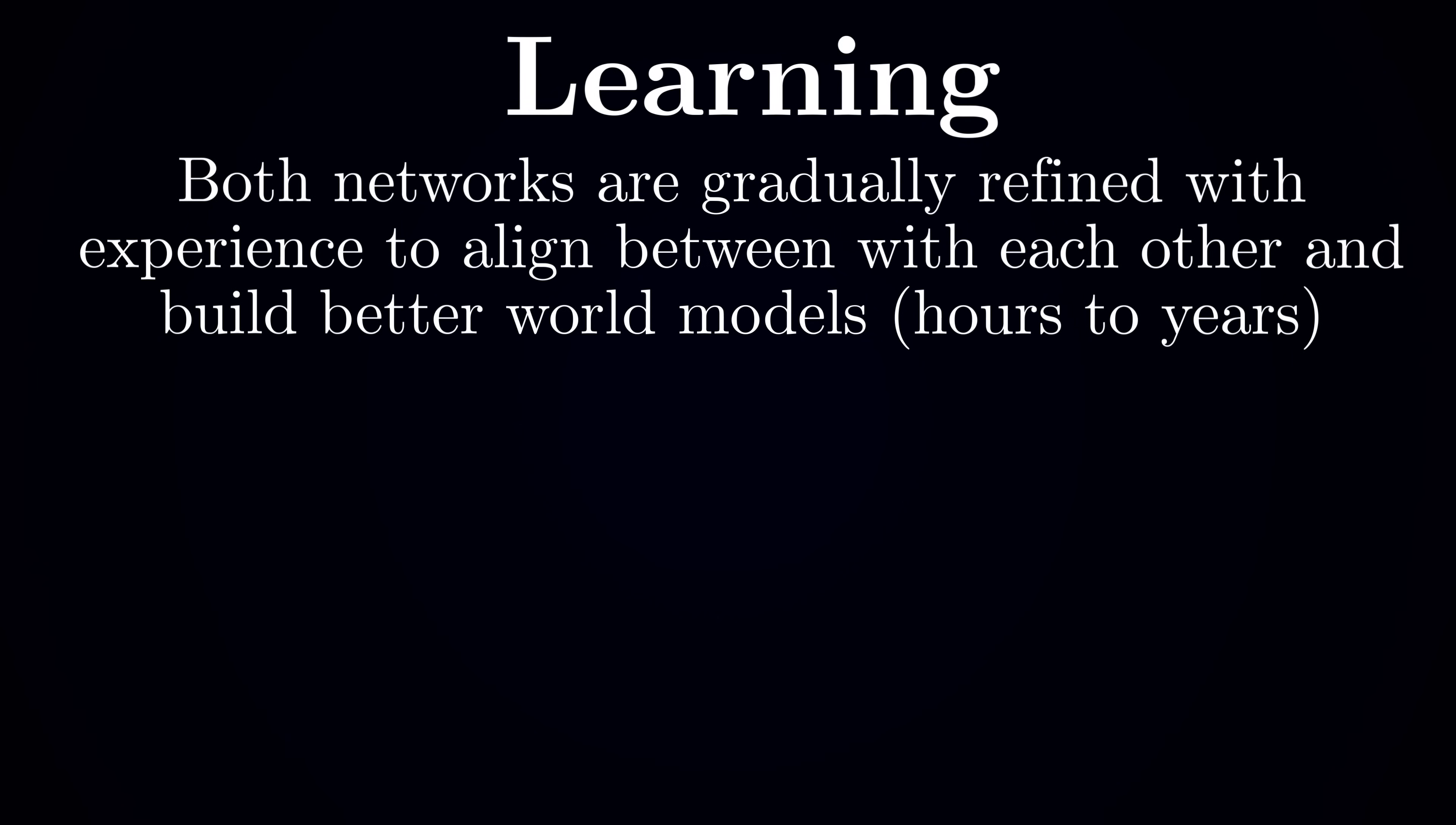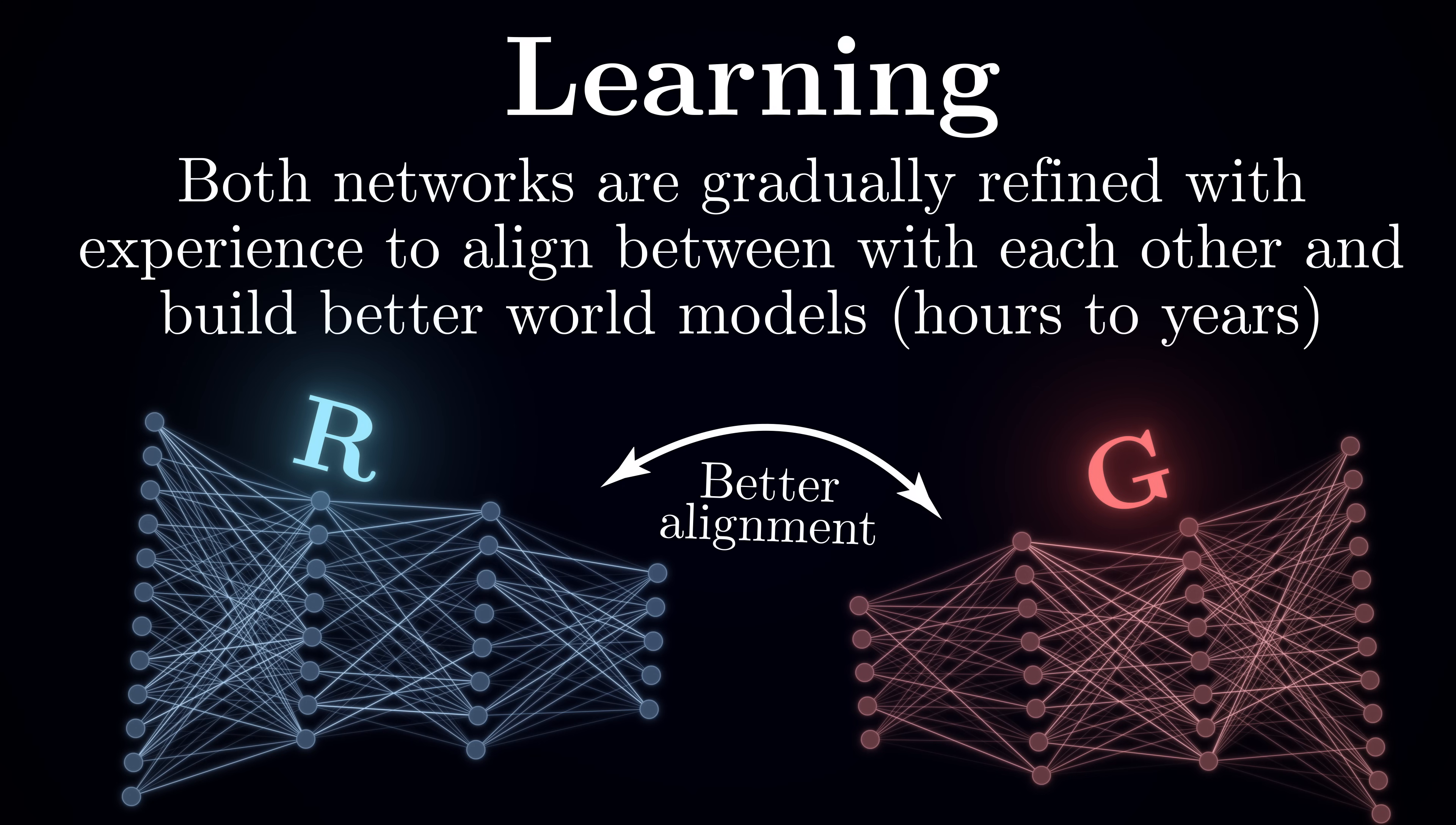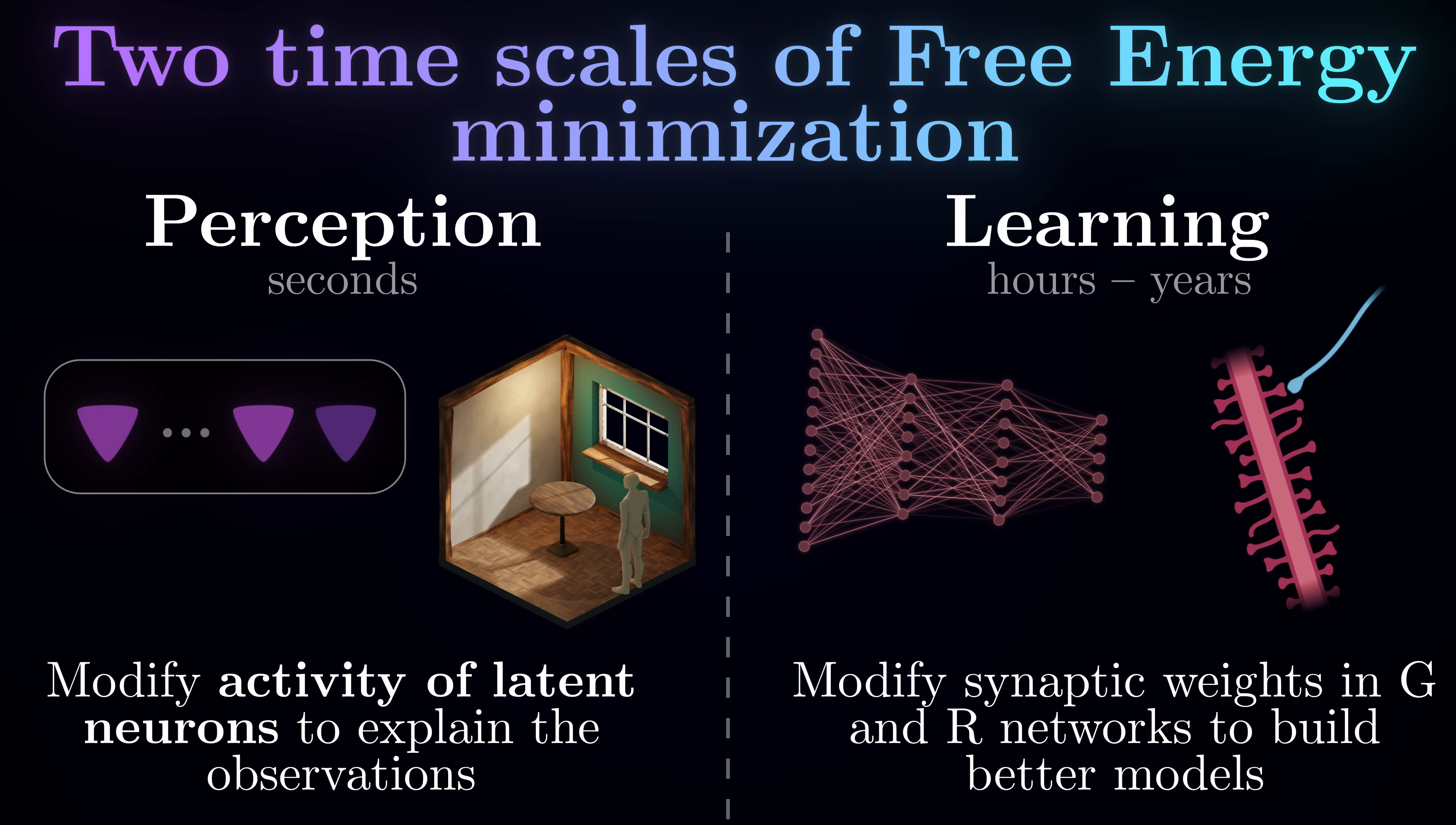But there is also a longer-term process of learning. Over time, the brain gradually refines both models by adjusting connection weights between the neurons. The recognition model gets better at making initial guesses, and the generative model gets better at predicting their sensory consequences and builds up better prior expectations of causes. Importantly, even though perception and learning operate on two different timescales, they both serve the same overarching goal - reducing uncertainty in the world by building optimal models of the environment and finding explanations for sensory data within those models.